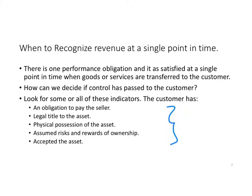In many examples, the product is delivered and the customer has an obligation to pay within a certain number of days. The seller can book the revenue because the customer has control even though the customer has not yet made payment. That's the whole basis of recognizing revenue and setting up an account receivable.